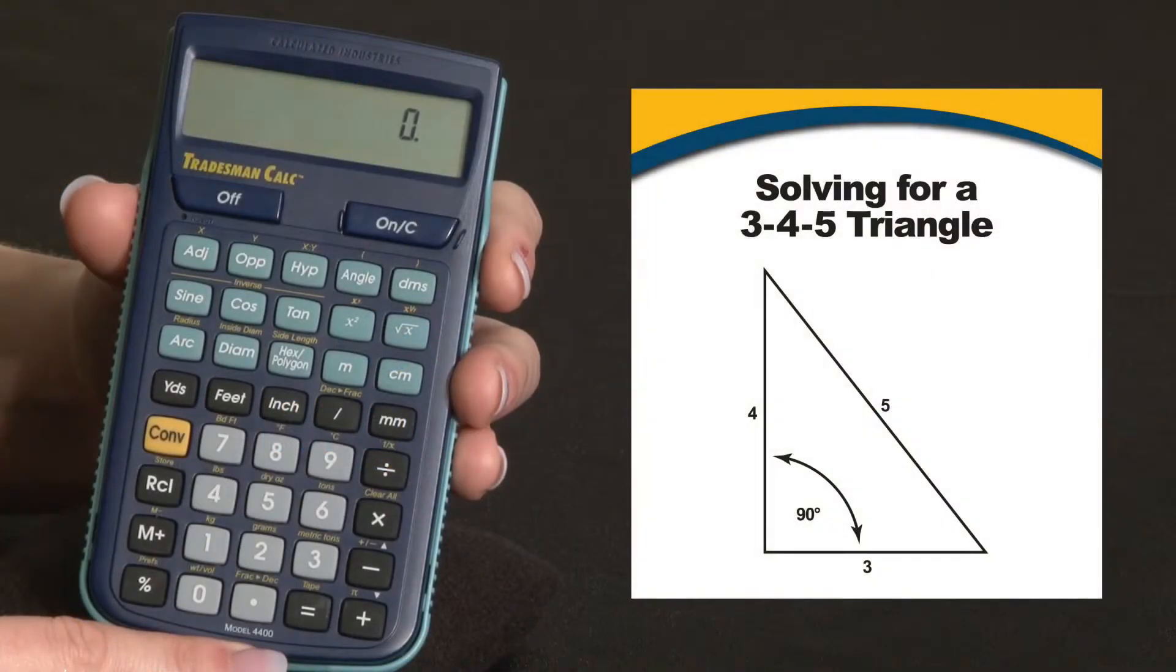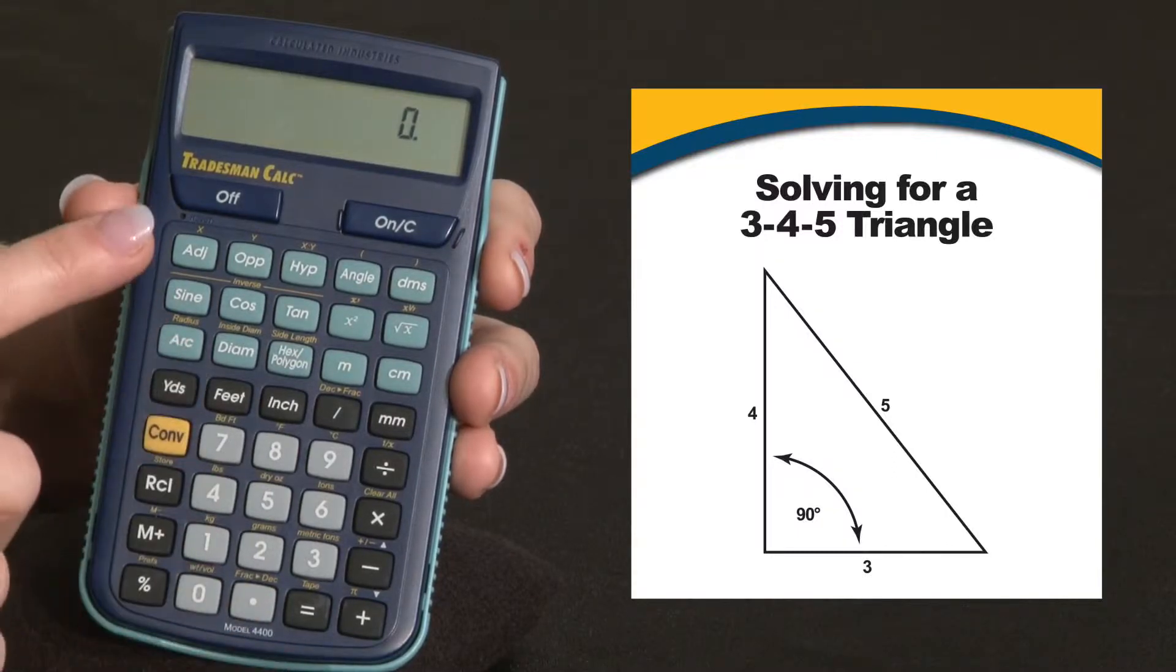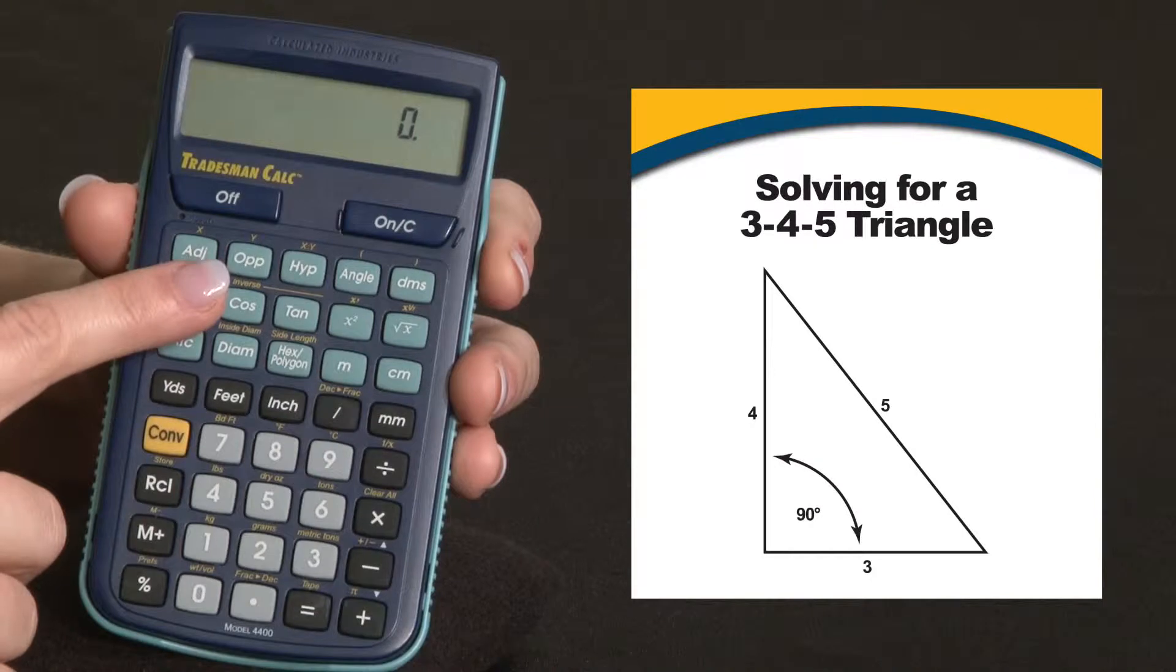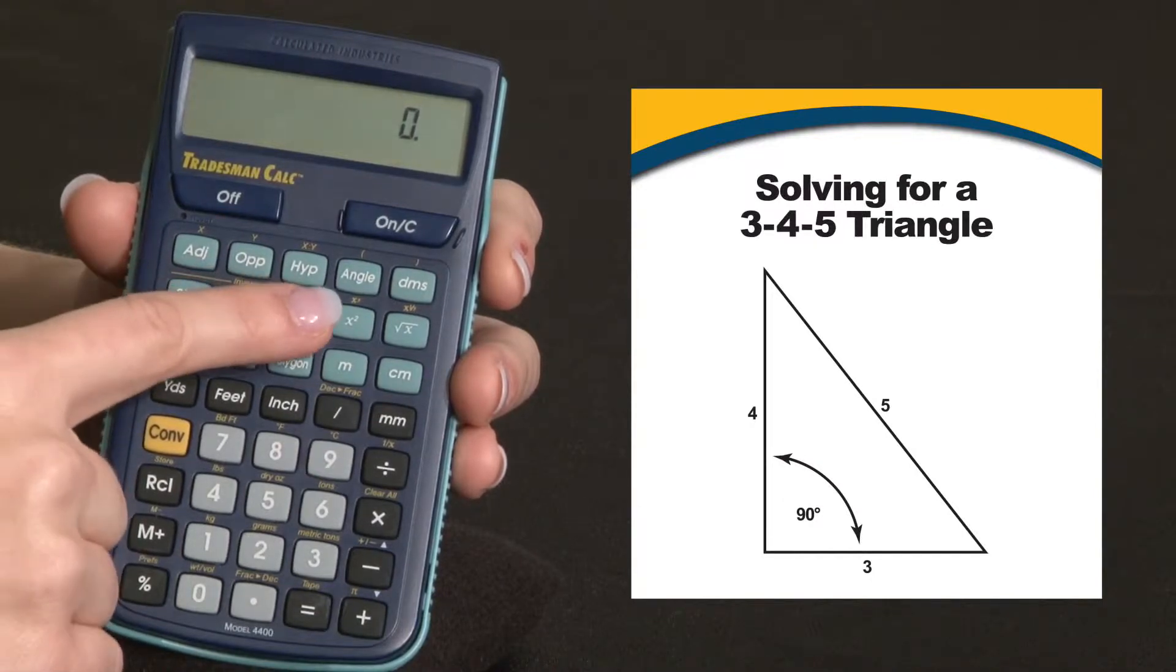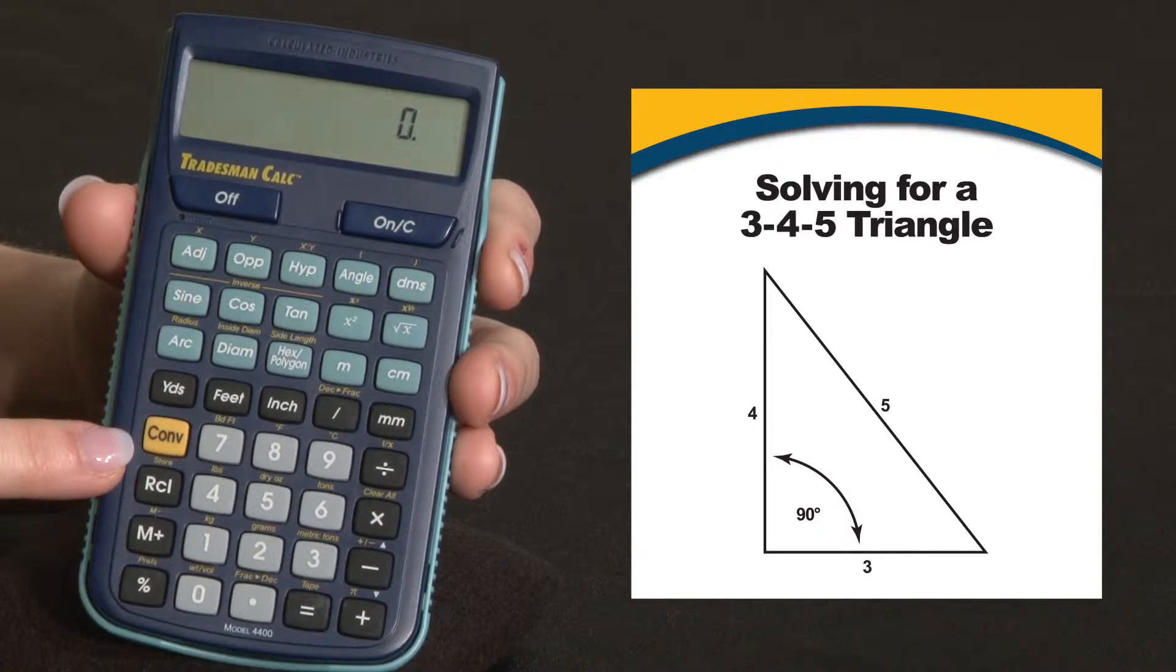With the Tradesman Calc, you can quickly solve right triangle problems by simply entering any two of the four variables: adjacent side length, opposite side length, hypotenuse or angle, and in US or metric units or both.